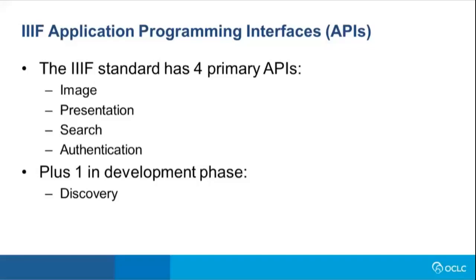The Presentation API is more of a structural binding API. For example, if you have a manuscript with 400 pages, each page might be an individual image. It's very important to make sure those images are in the correct order — page one before page two, and so on. The Presentation API combines them all together and connects annotations to individual images. So if you have annotations for page one, the Presentation API hooks up those annotations to the appropriate page.